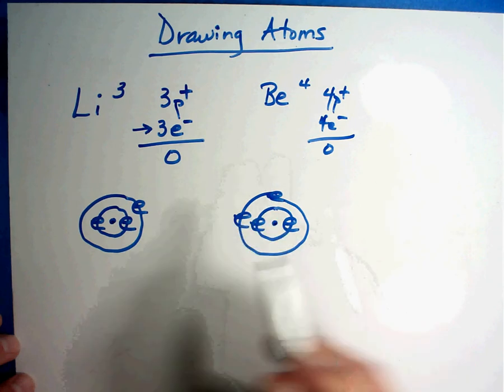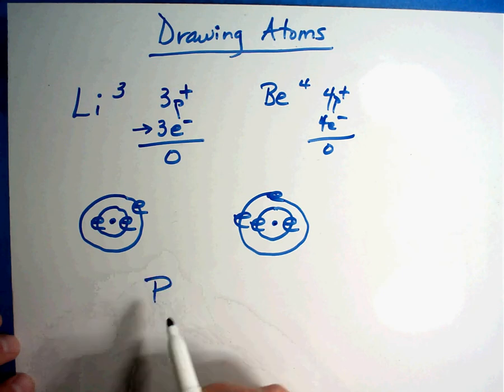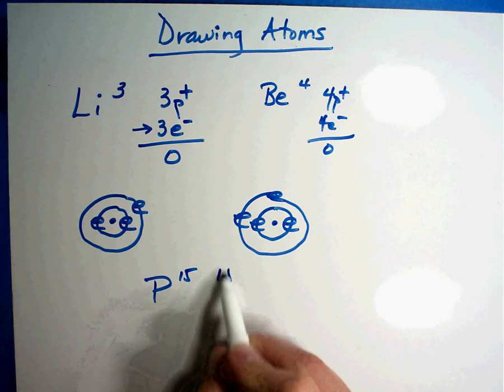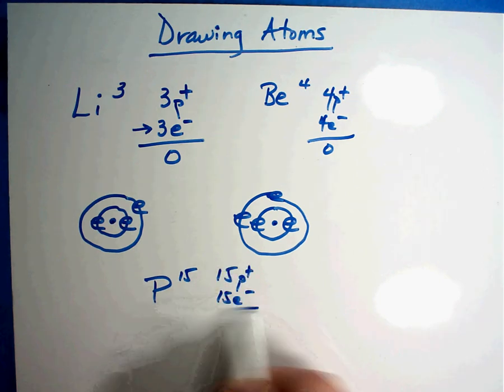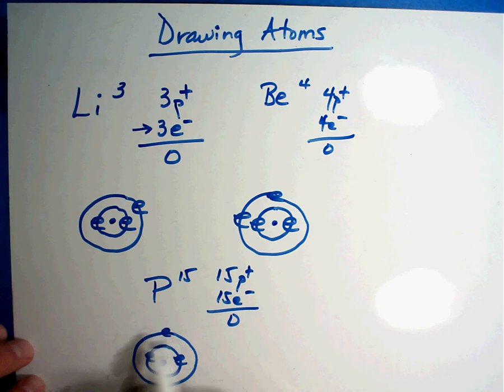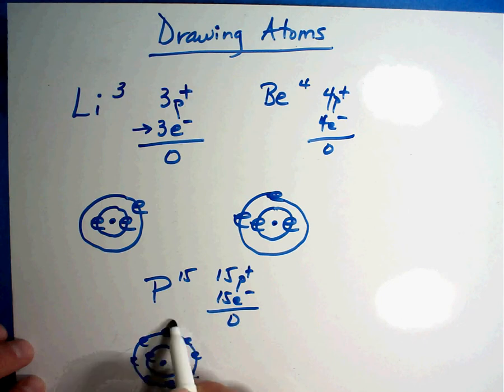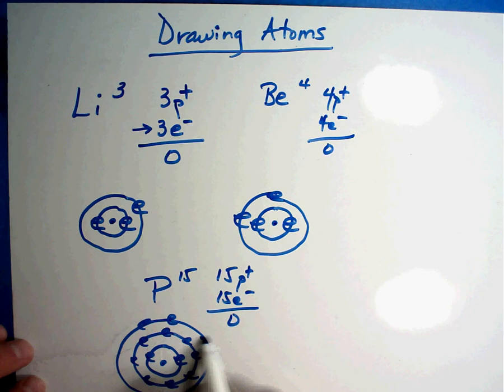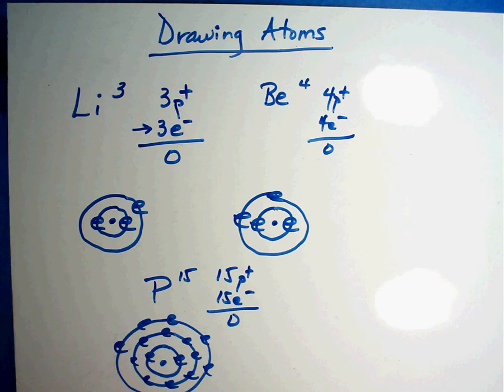Now let's do one just a little bit bigger. Let's do one like phosphorus. Phosphorus is element number 15, so that's 15 protons, 15 electrons, neutral. When I go to draw this, that means there's going to be one, two in the first, eight in the second: one, two, three, four, five, six, seven, eight. That's eight, nine, ten. Still have some more. Eleven, twelve, thirteen, fourteen, fifteen. Doesn't matter where I put them, but there's all fifteen electrons.